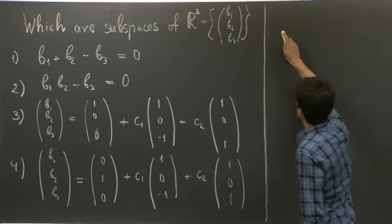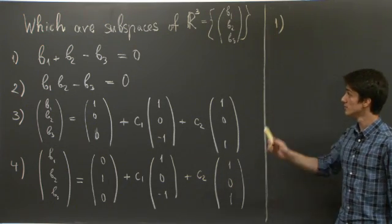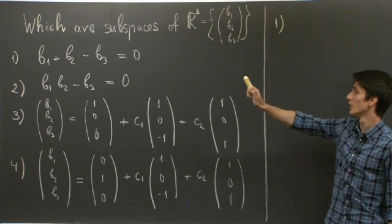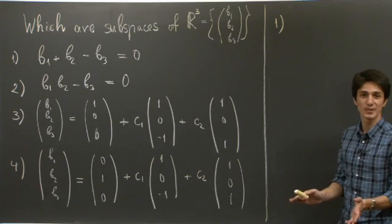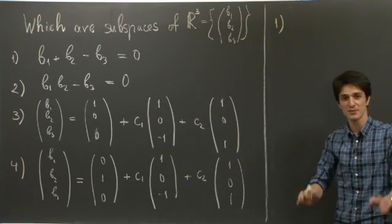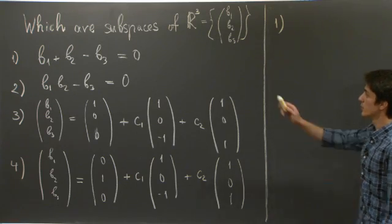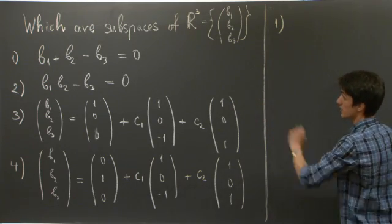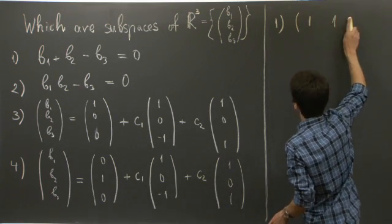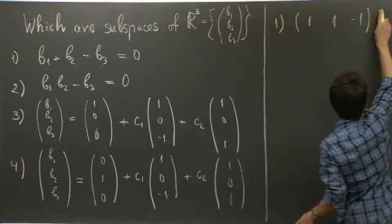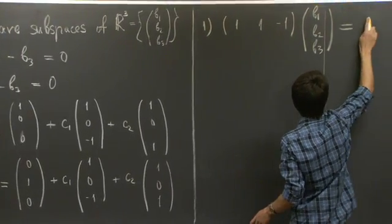Number one. We are given a linear equation relation between b1, b2, and b3. Once we have something linear, we know—this is a philosophy you'll learn in this class—we can always write this as a matrix equation. So in particular, b1 + b2 - b3 = 0. We can just write it as the matrix (1, 1, -1) times (b1, b2, b3) equal to 0.